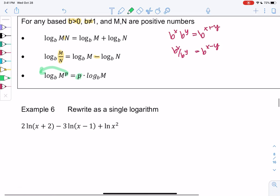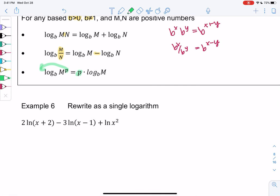So let's go ahead and rewrite this example 6 as a single log. Sometimes it's just more useful as a single one. So what I'm going to do is I'm going to use these three properties to do that. I can't combine them if they have coefficients. So to get rid of coefficients, I'm going to use the power property and bring them inside.